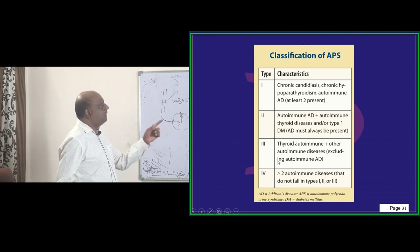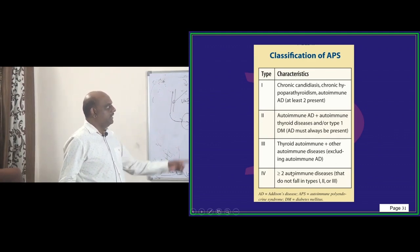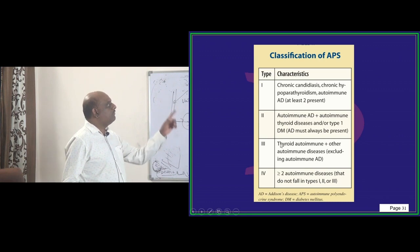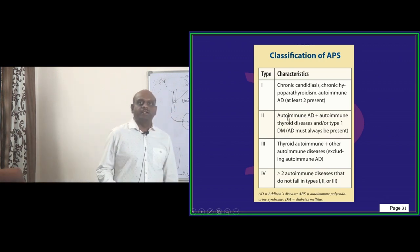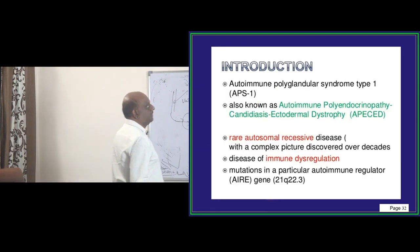Type 3: you have autoimmune thyroid, other autoimmune, but not Addison. Type 4: more than 2 autoimmune that do not fall into type 1, 2, or 3 - that becomes type 4. These are all the types you have to emphatically remember, doctor.